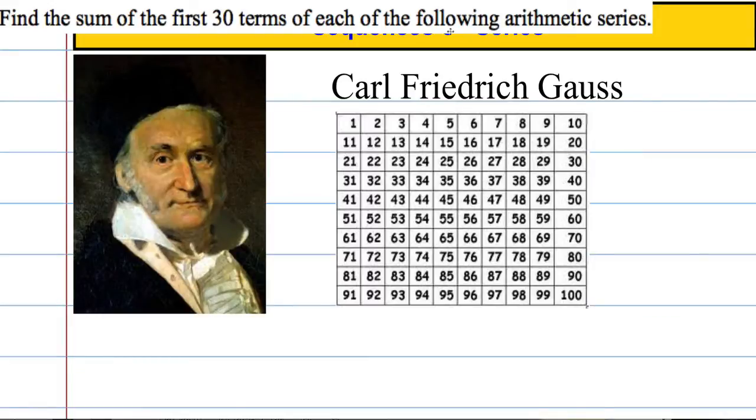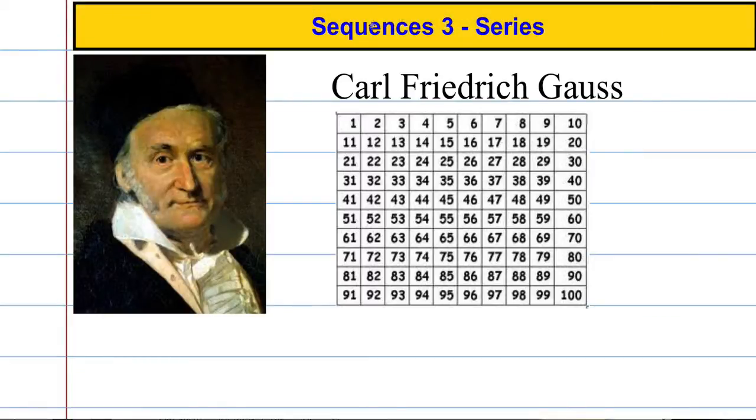Now I'm going to introduce you to this guy here. His name is Karl Friedrich Gauss. There's a famous story surrounding this guy. He was in school and was told by his teacher that he had to add up all the numbers from 1 to 100. The teacher was absolutely flabbergasted to discover that Gauss had managed to complete this task in a matter of minutes. Very quickly indeed.